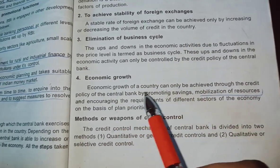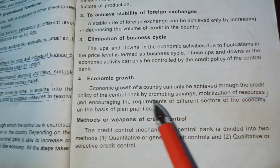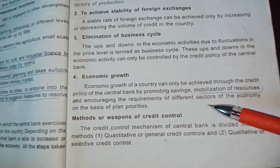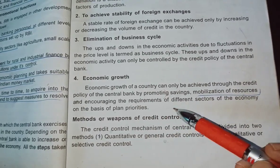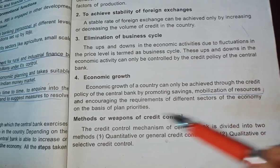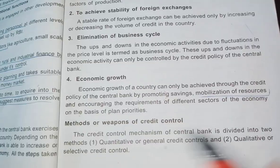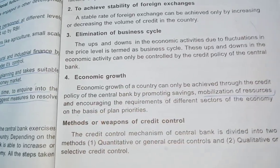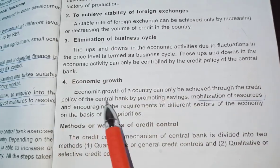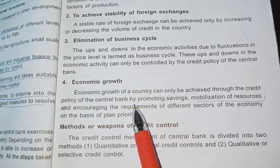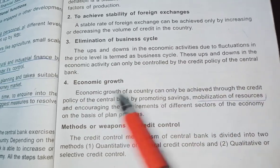Fourth, economic growth. Economic growth of a country can only be achieved through the credit policy of the central bank by promoting savings, mobilization of resources, and increasing the requirement of different sectors of the economy on the basis of plan priorities.